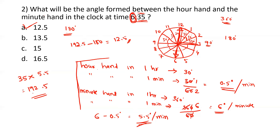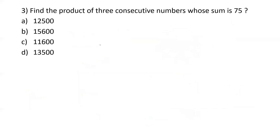You can solve it either way — using the formula or logical thinking. Depending on the situation and difficulty level of the question, choose which method to use. Now let's move on to the next question: find the product of three consecutive numbers whose sum is 75.